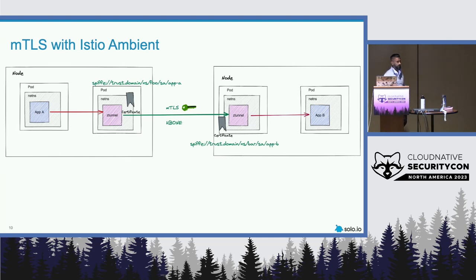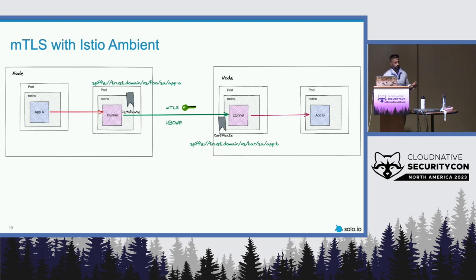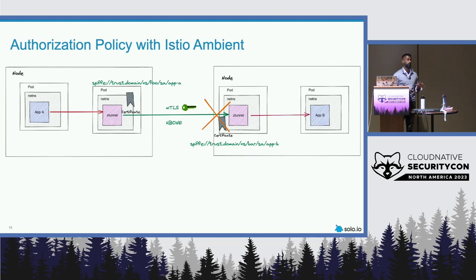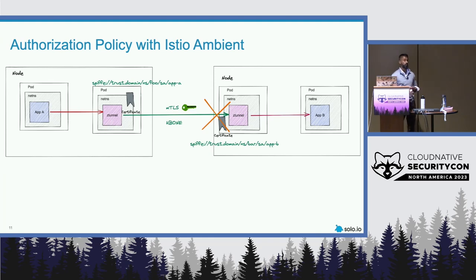The Z-tunnel itself actually impersonates the identity of that workload. If App A is trying to communicate with App B, the Z-tunnel derives identity from the actual workload itself using the SPIFFE ID format and forms its MTLS — the same as the sidecar would have. This is also where we can apply our layer 4 authorization policy, which I look at as a layer 3/4 firewall. We can say a certain set of workloads with a label — looking at it at a TCP/IP layer, not layer 7 — can't talk to another service. We can implement a firewall-style policy repeatedly if we want.